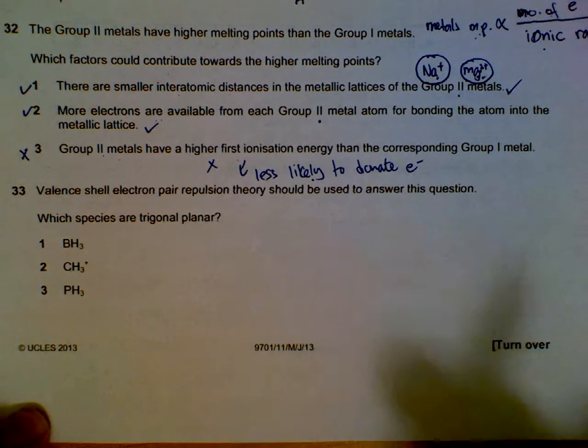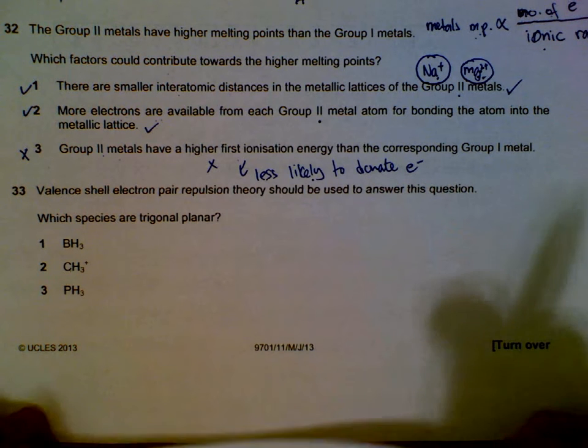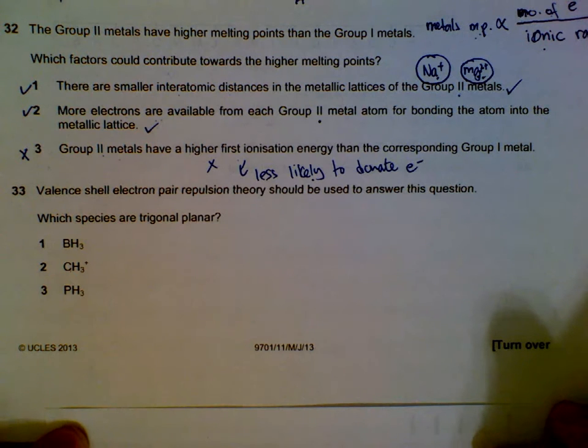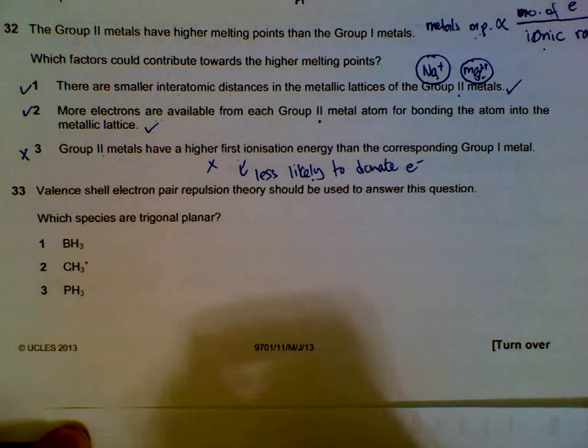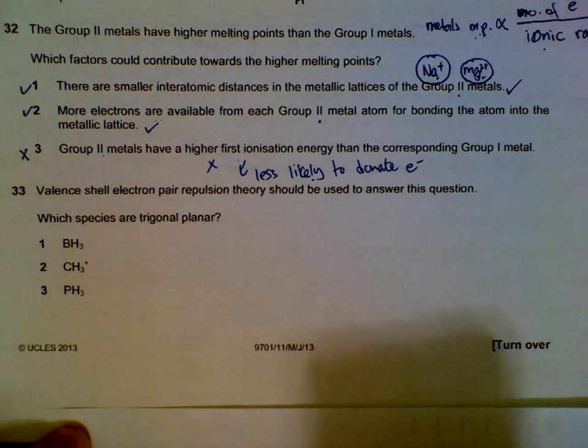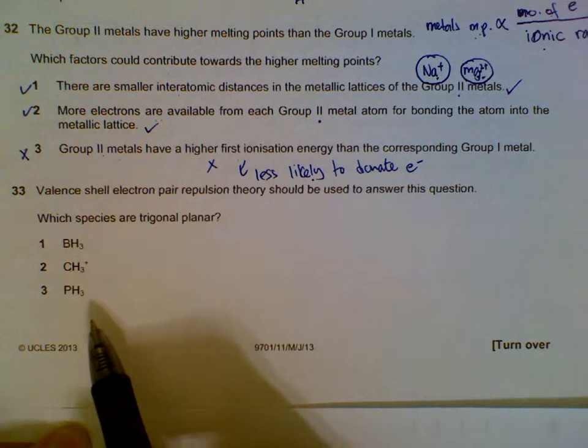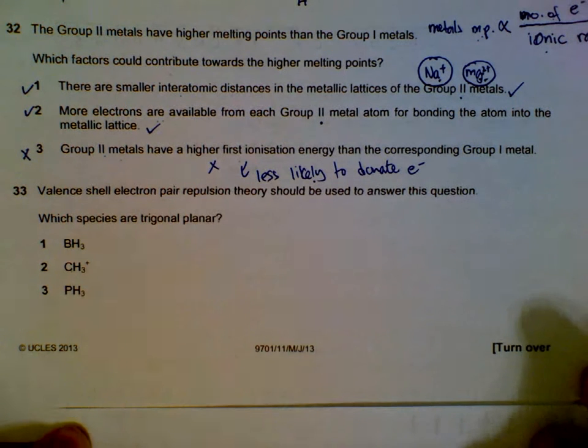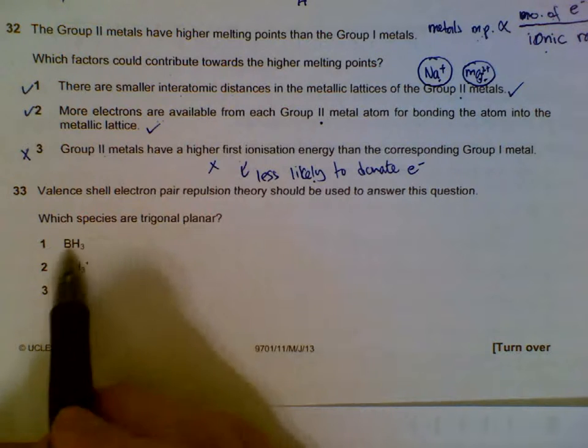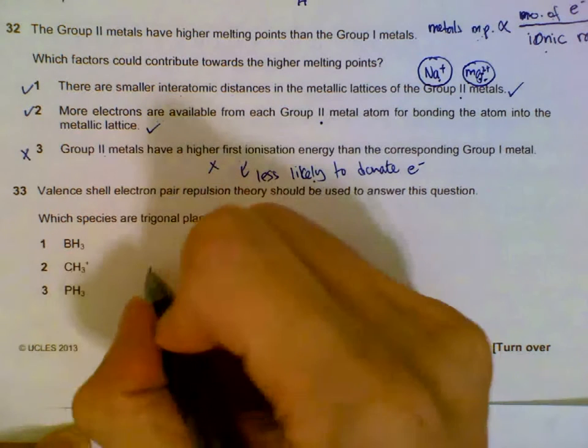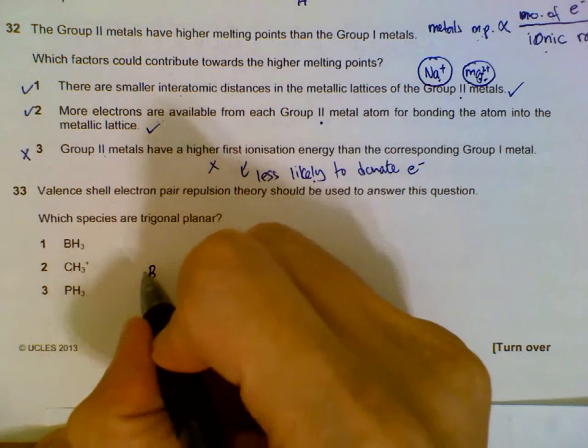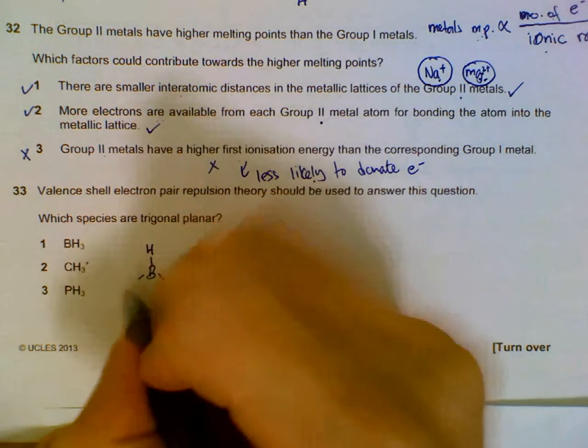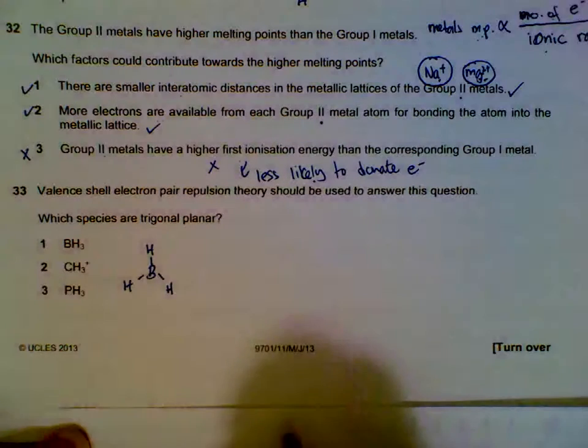Question 33: we are required to know the shapes of the molecules based on the theory here. I'll go through the theory in detail, draw the shapes quickly, and then you match whether you got the correct shape. Which species are trigonal planar? BH3 has three outer electrons which are used to bond to hydrogen.